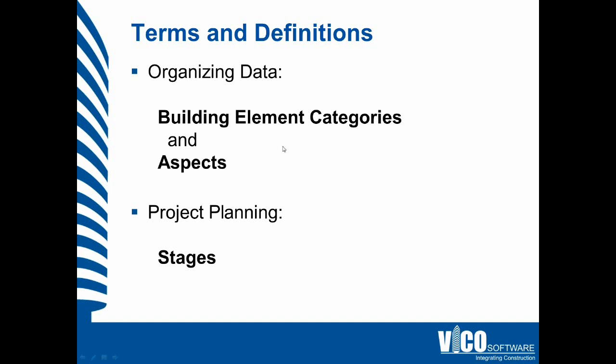For project planning, we use stages. We use stages that are numbered rather than phases such as 50% CDs or 90% CDs that you typically use, because we believe that with building information models you will have more stages than the traditional phases.